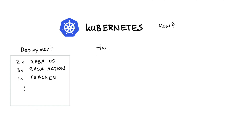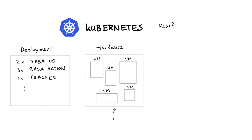This deployment can be seen as a recipe list — a file that describes all the containers I want to have running, and maybe also how these different containers and services should talk to each other. The next part of the equation is the hardware: the servers or virtual machines that we would like to deploy these services onto.